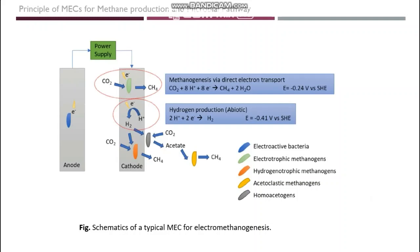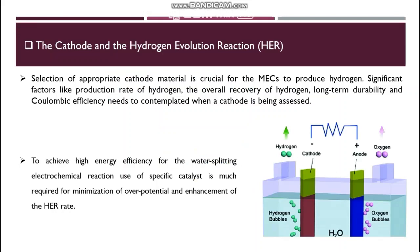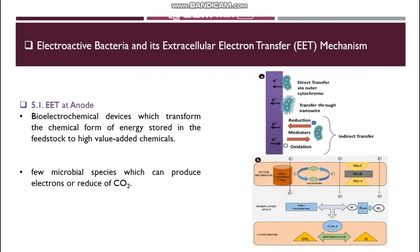Externally provided electrical energy is needed to drive the reaction thermodynamically. Hydrogen is one of the striking alternatives for fossil fuels in the approaching future, so selection of an appropriate cathode material is very important for microbial electrolysis cells to produce hydrogen. Significant factors like production rate of hydrogen, overall recovery of hydrogen, long-term durability, and Coulombic efficiency need to be considered when a cathode is assessed. To achieve high energy efficiency for the water-splitting electrochemical reaction, use of a specific catalyst is required for minimization of overpotential and enhancement of the hydrogen evolution reaction rate.